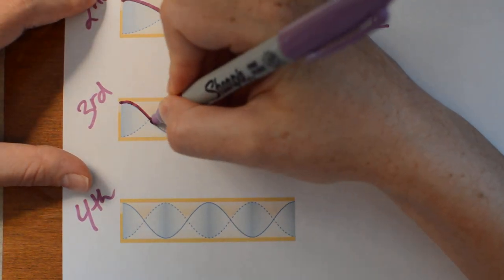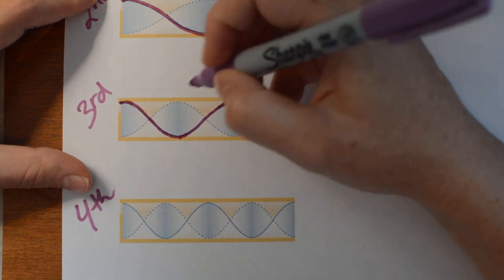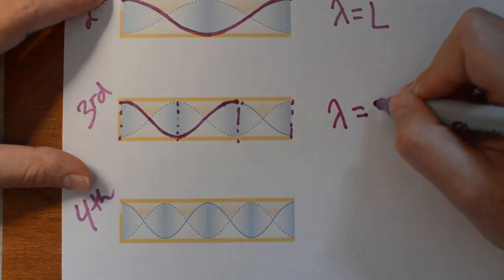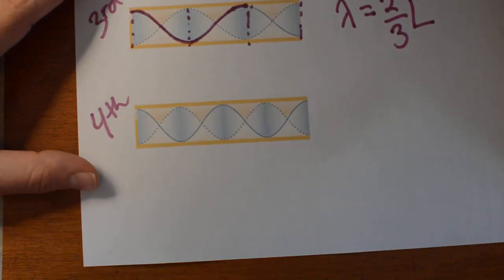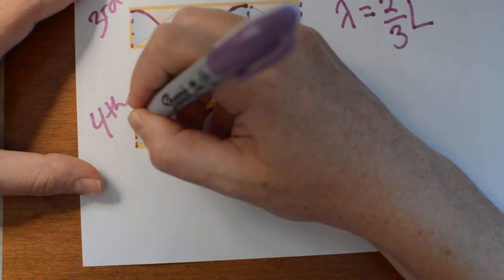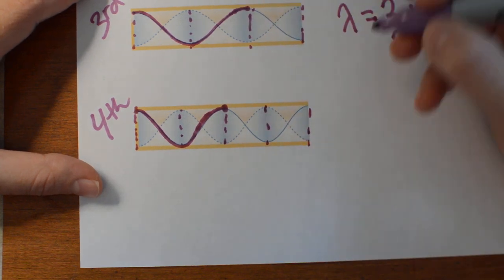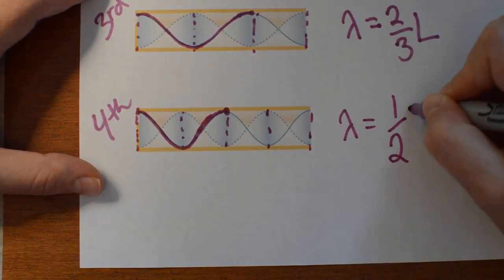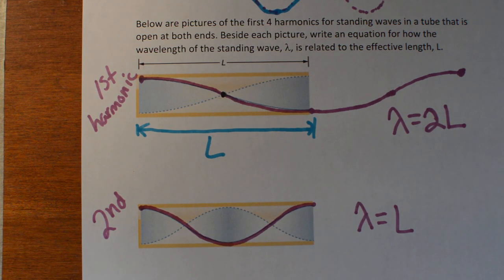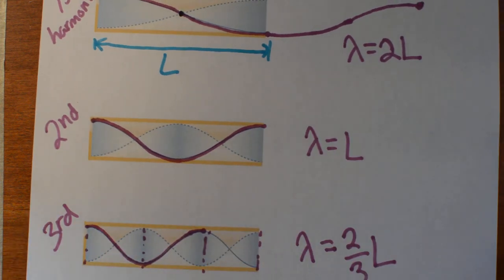Continuing the pattern: for the third harmonic, lambda is 2/3 of the length. For the fourth harmonic, lambda is half the length. In a flute, how you get from the first harmonic to the second harmonic is basically you just blow harder. If you've ever played a wind instrument, you've experienced that — if you want to jump into the next octave up, just blow harder, keep your fingering exactly the same, and the note you produce will be an octave higher. I can't even make third harmonics, but if you blew really hard, maybe you could.